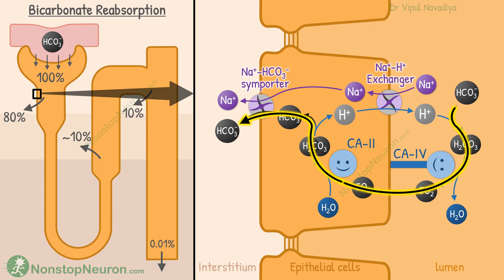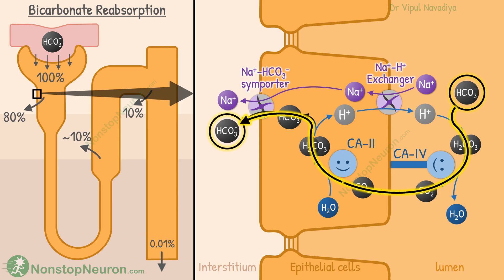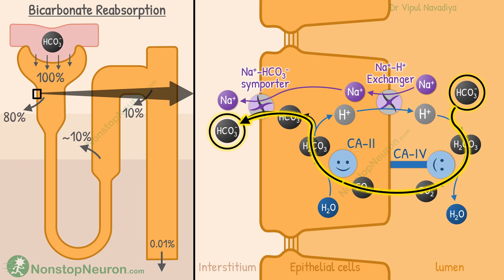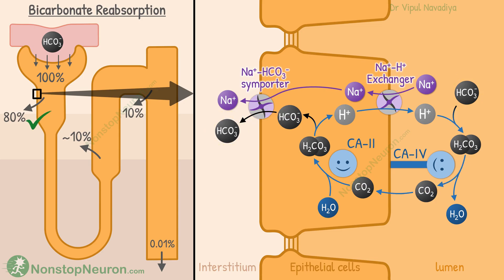During each such cycle, one bicarbonate ion disappears from the lumen and appears in the interstitium. This way, the bicarbonate keeps being reabsorbed from the tubule. This basic mechanism of reabsorption is the same in all the segments.